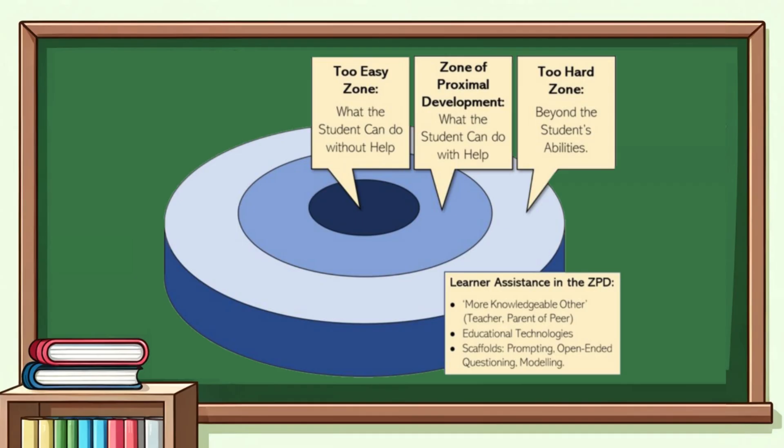It is depicted by concentric circles as shown here. There are three zones: what the child can do without help, in the middle of the concentric circles, what the child can do with help, and on the outside, what the child couldn't do even if they had support from a more knowledgeable other.